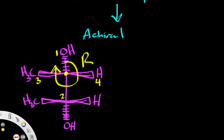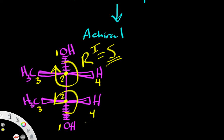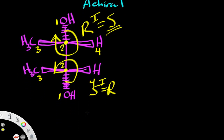However, our lowest priority group is pointing toward us rather than away, so we invert and we get an S. Now looking at this second carbon, we have priorities one, two, three, and four, and moving in this direction we have an S configuration. Again, the hydrogen is pointing toward us rather than away, so we invert and end up with an R. So in total, the molecule has an S,R configuration.